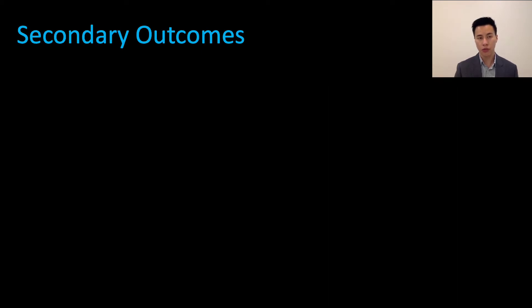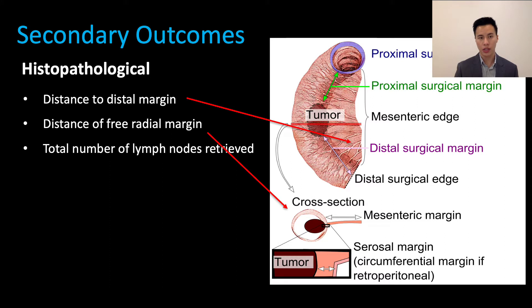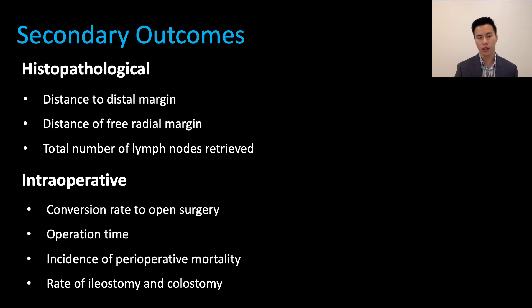We measured several secondary outcomes, such as the distance to distal margin, defined as the distance between the distal edge of the tumor to the anal verge; the distance of free radial margin, defined as the minimal distance between the tumor and the cut edge of the tissue; and lymph nodes retrieved. We also looked at intraoperative outcomes such as conversion rates to open surgery, operation time, perioperative mortality, and rates of ileostomies and colostomies.